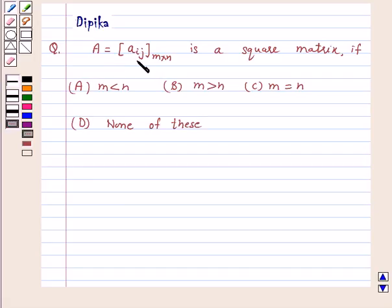A equals a matrix of order m by n. A is a square matrix if: (A) m is less than n, (B) m is greater than n, (C) m equals n, or (D) none of these.